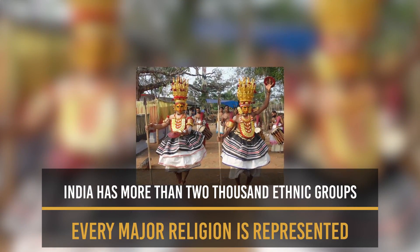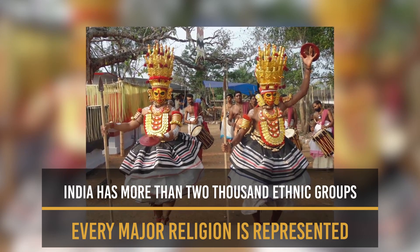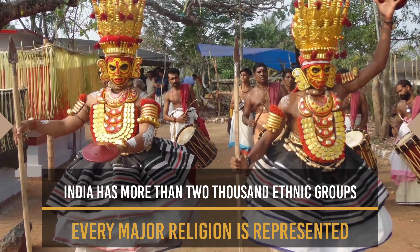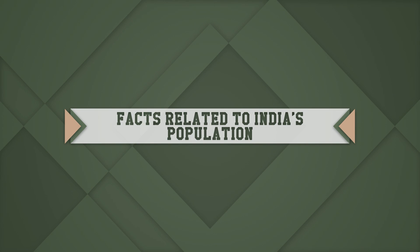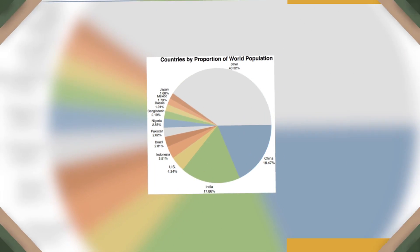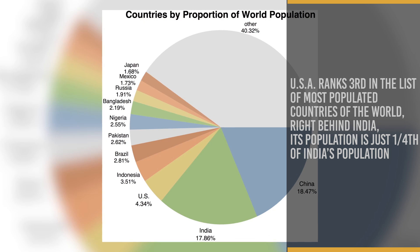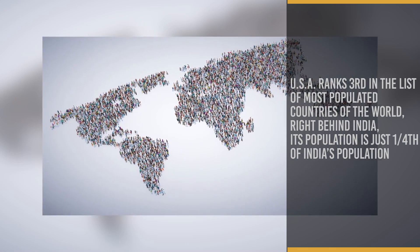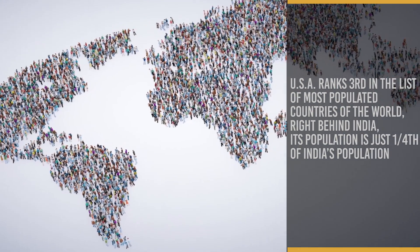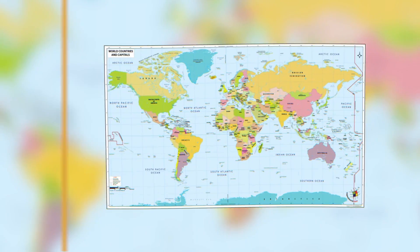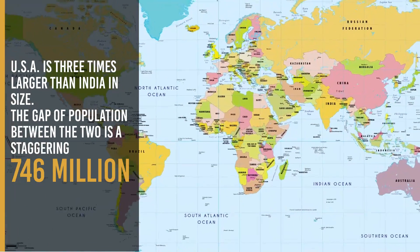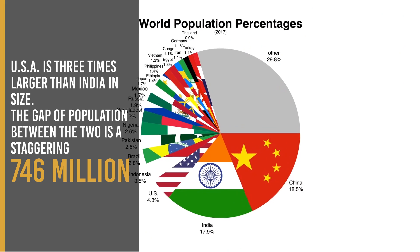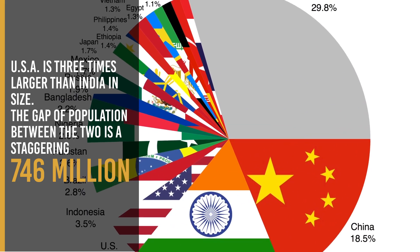India has more than 2,000 ethnic groups and every major religion in the world is represented here. Even though the United States of America ranks third in the list of most populated countries of the world, right behind India, its population is just one-fourth of India's population, not forgetting that the USA is three times larger than India. The gap in population between the two is a staggering 746 million.